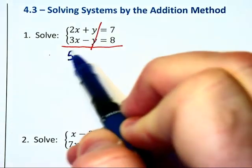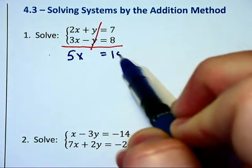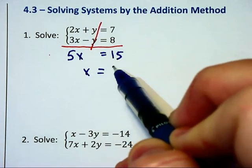Add the equations together to get 5x is equal to 15 and then we have x is equal to 3.